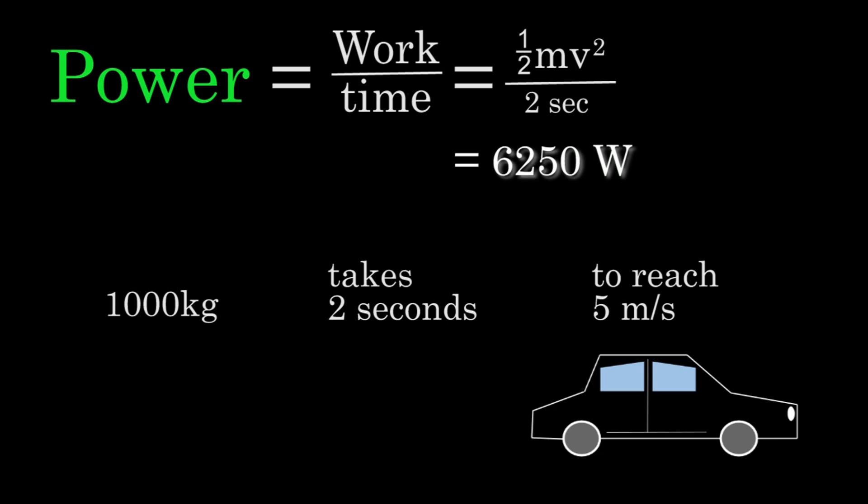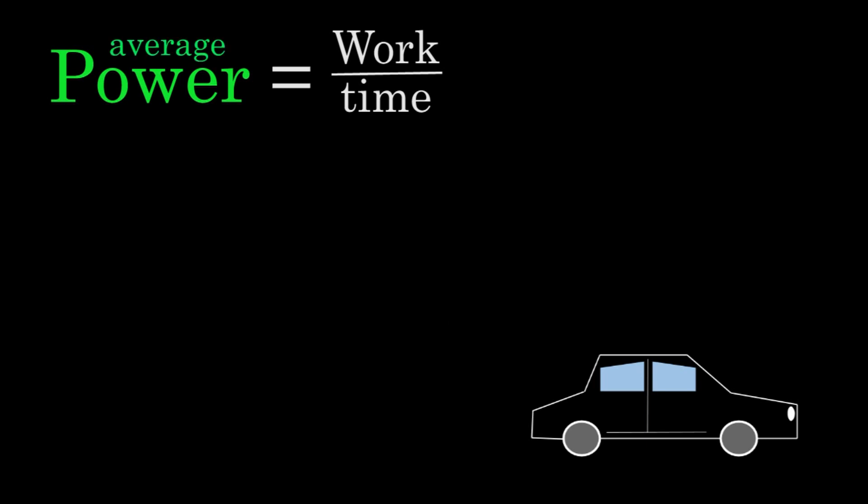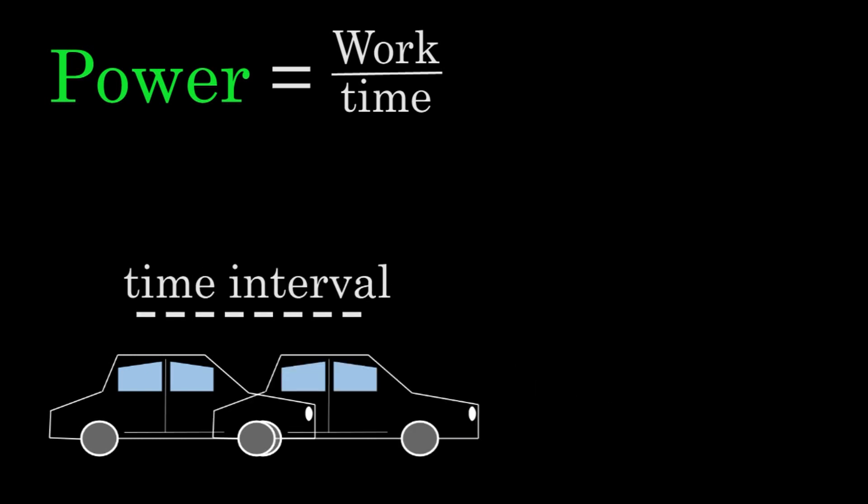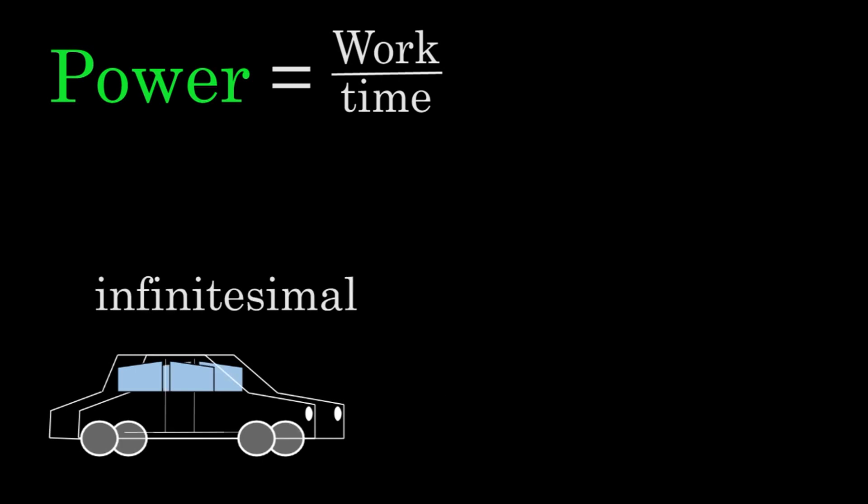We should be clear that what we've really been finding here is the average power output, because we've been looking at the total work done over a given time interval. If we were to look at time intervals that got smaller and smaller, we'd be getting closer and closer to the power output at a given moment. And if we were to make our time interval infinitesimally small, we'd be finding the power output at that particular point in time.